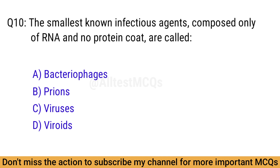Q10. The smallest known infectious agents composed only of RNA and no protein coat are called? The right answer is option D: Viroids.